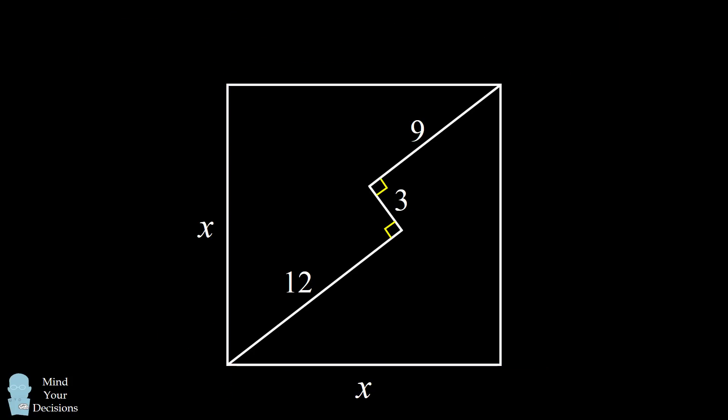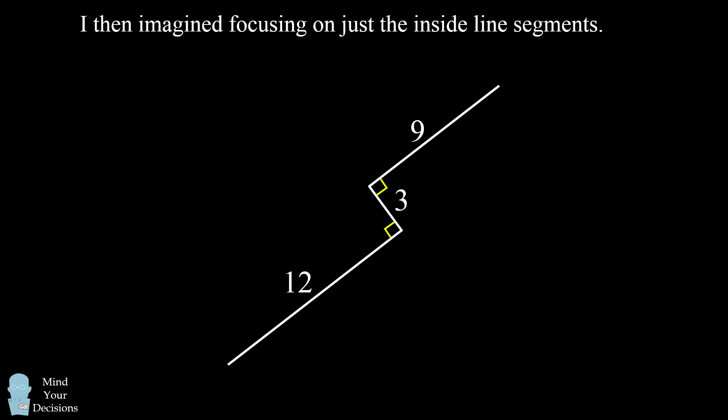So then it struck me in the third approach I took to this problem. I imagined focusing on just the inside line segments in the interior of the square. I wanted to figure out the distance from end to end. So I considered what would happen if I rotated the figure so it would be easier to analyze.